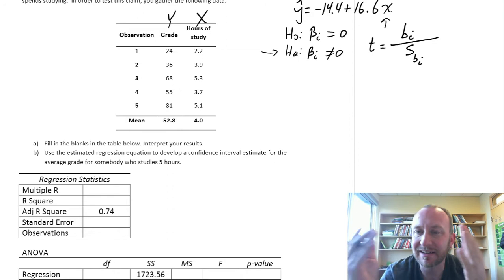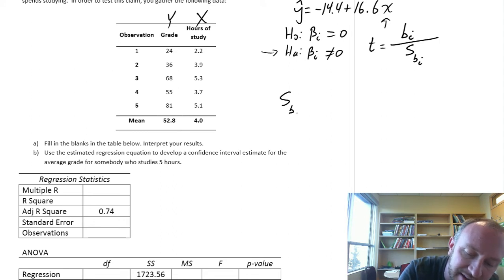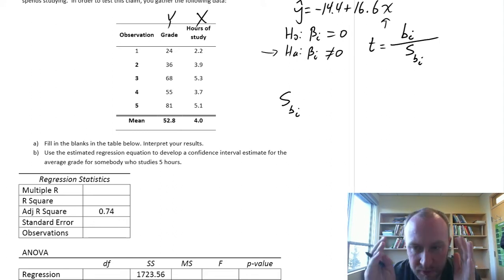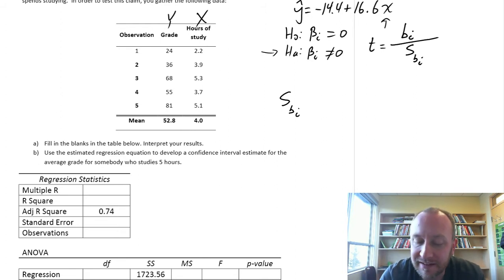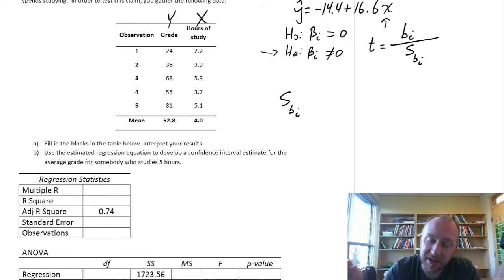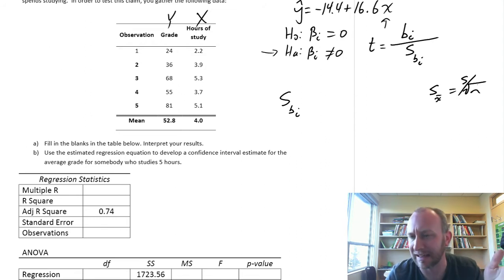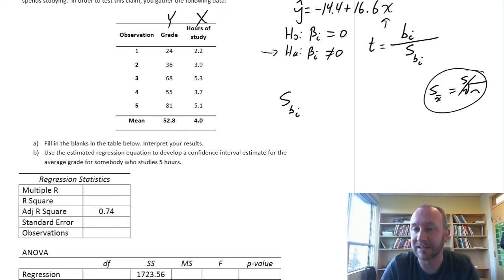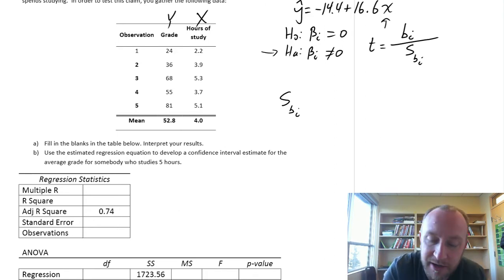We've already calculated those coefficients — the numerator. What we haven't calculated is the standard error of that coefficient. The standard error of the coefficient has the same general meaning as it's had for other t-tests: it gives us an idea of the distribution of those point estimates. Just as when we calculated the standard error of the mean back in module 9, which gave us information about the distribution of sample means within a population — here it's the same thing, except we're talking about this coefficient and how it's distributed.